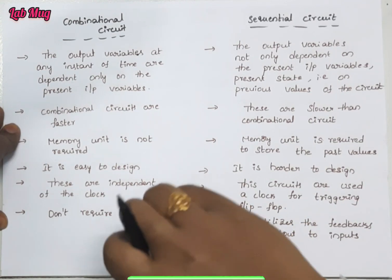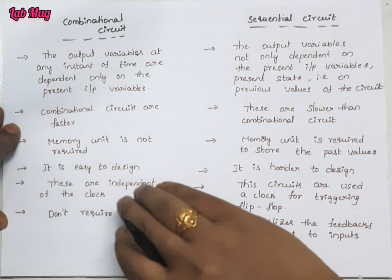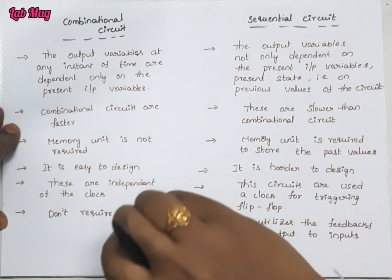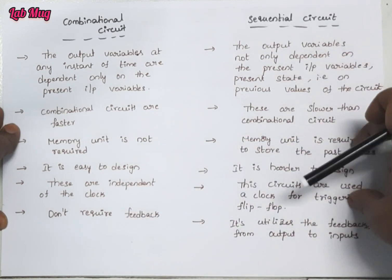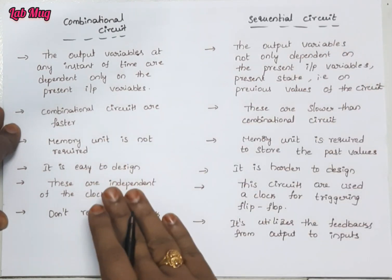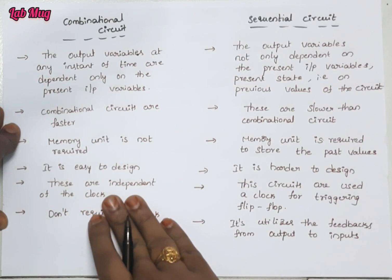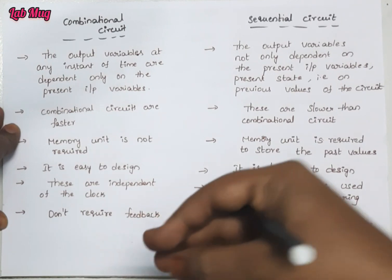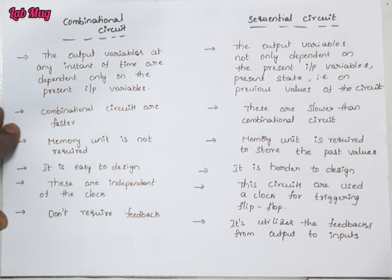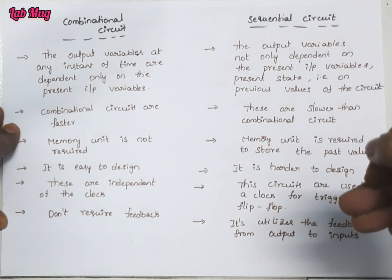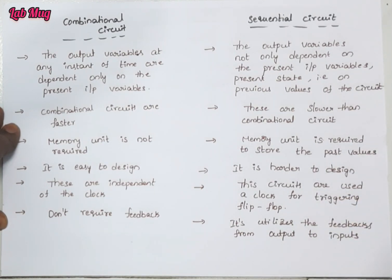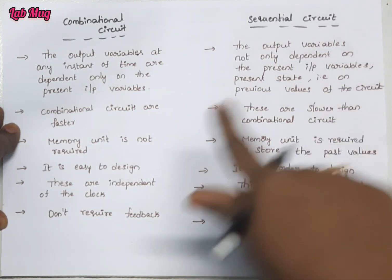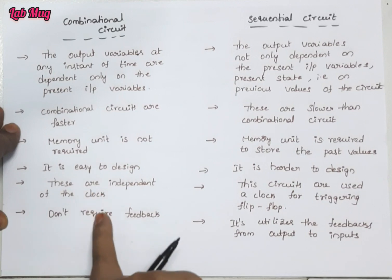Because of the design of combinational circuits, we don't store previous values anywhere. Normally, whatever present inputs are there, we process them and get the outputs. So the design is very easy. But in sequential circuits, the design is hard compared to combinational circuits, because we have to design it so that both present values and previous values can be accessed to get the output.